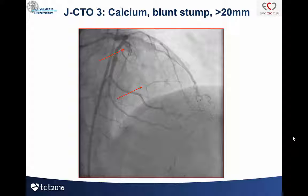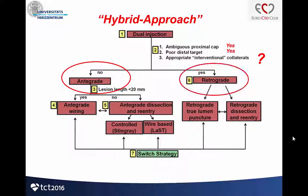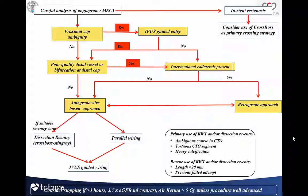It's a J-CTO score of 4, I think. Regarding the hybrid algorithm, we have an ambiguous cap, a poor distal target, and probably inappropriate collaterals. So I don't know if it's possible to get this landing zone with a Stingray. Probably better to go antegrade-retrograde.